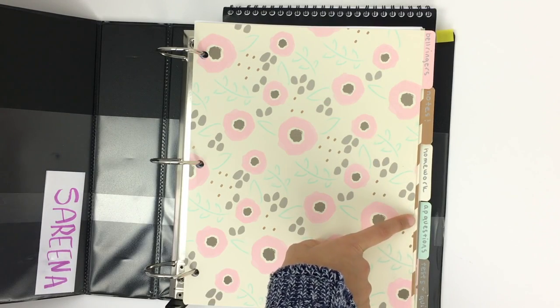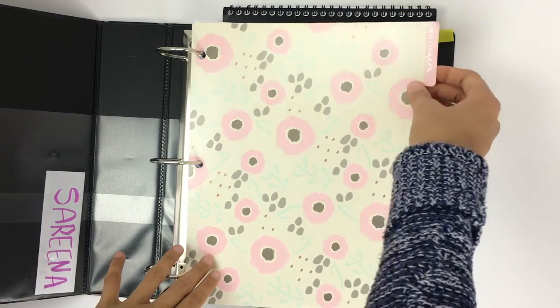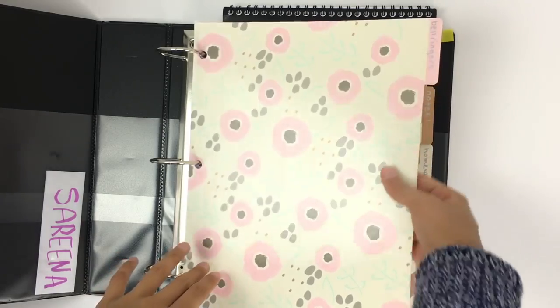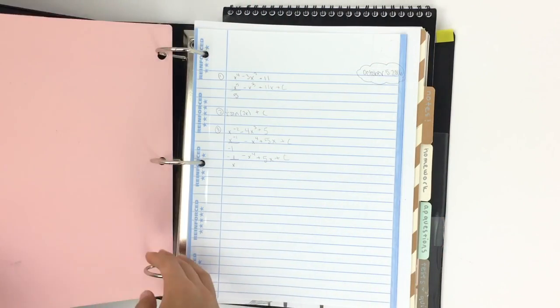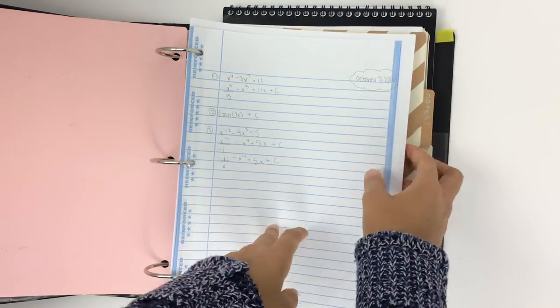I have a set of five file dividers, and I got these dividers from the Target dollar spot. I thought the patterns were super cute. My first section is for bell ringers, and bell ringers are just classwork activities that we do each class as the bell rings to prepare us for the class ahead.